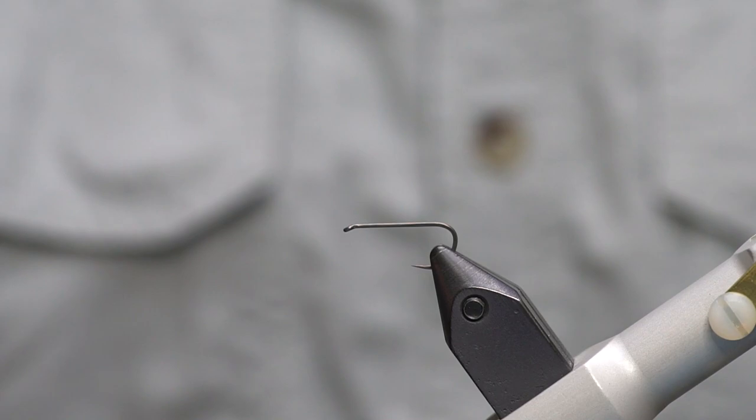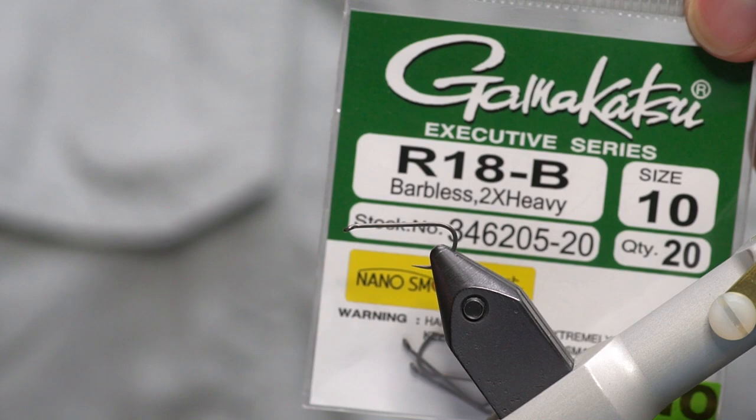So I'm starting with a hook in the vise. This is a Gamakatsu R18 size 10. You'll see that this is a barbless hook and it's also 2x heavy.